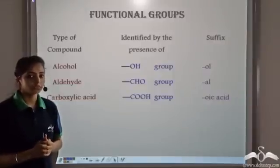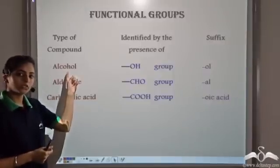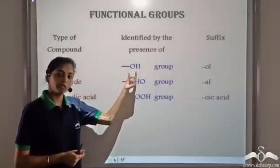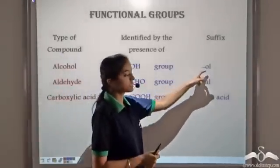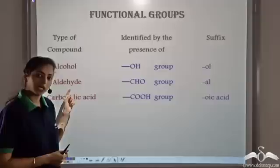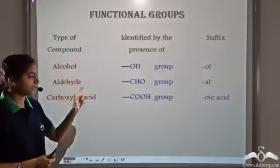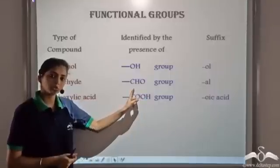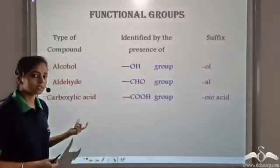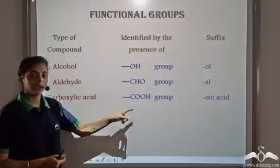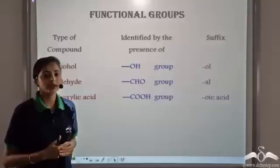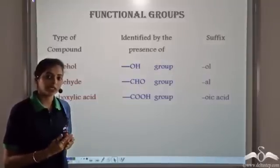We have seen the three functional groups. The alcohol group, which is identified by the OH group in the organic compound, and when we have this group, the suffix given is -ol. Similarly, when we have the aldehyde group, that is identified by the presence of a CHO group, we give the suffix -al. Similarly, when we have a carboxylic acid, which is identified by a COOH group, we give the suffix -oic acid.